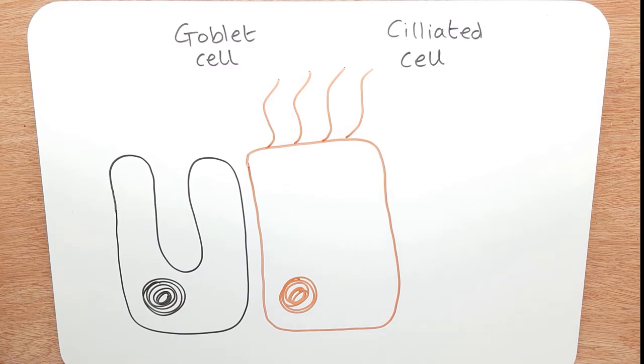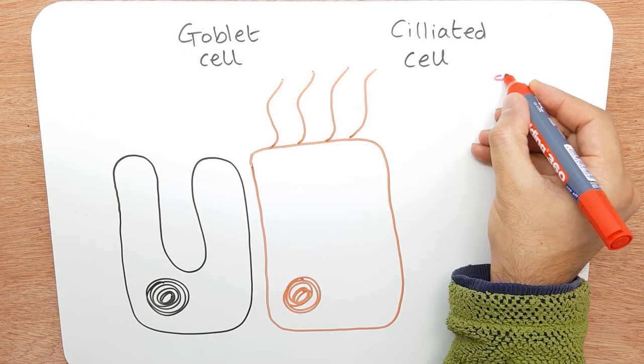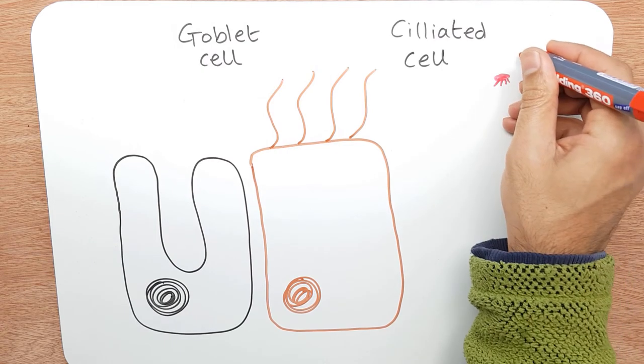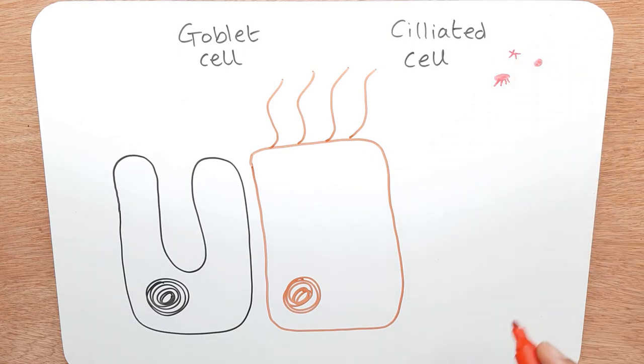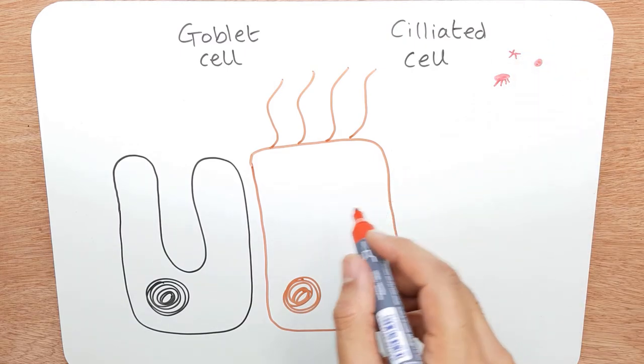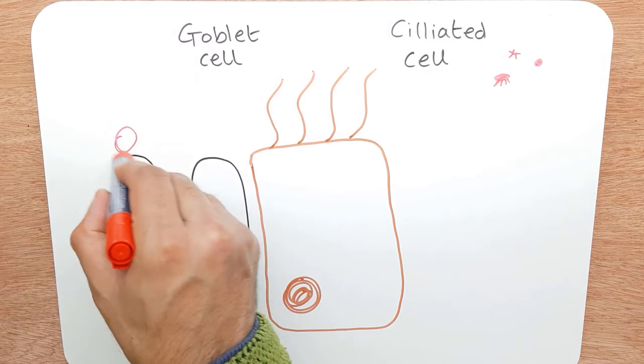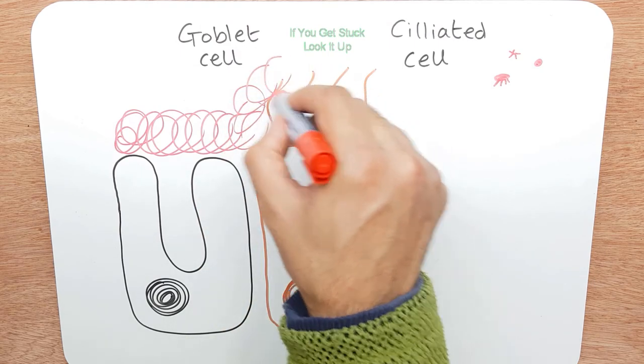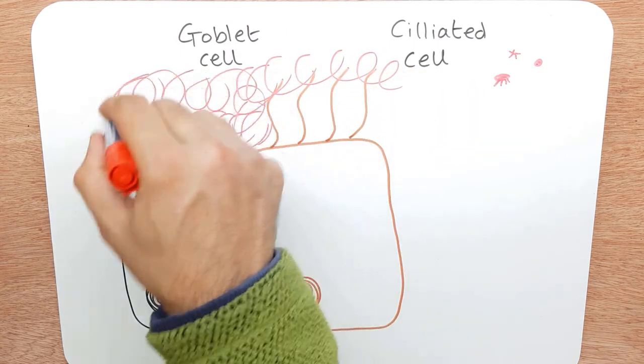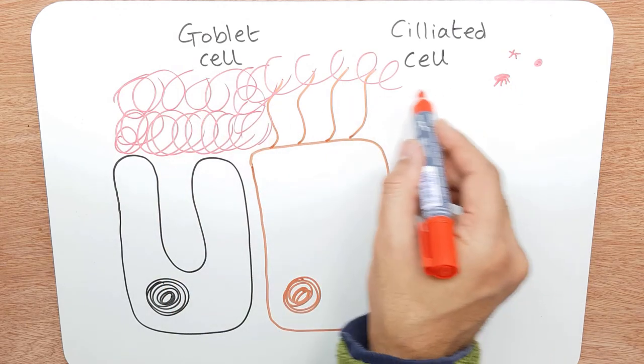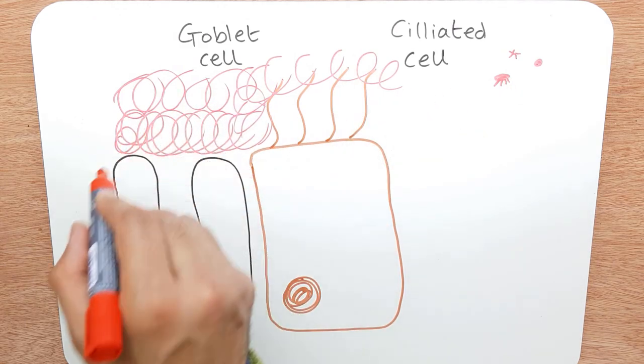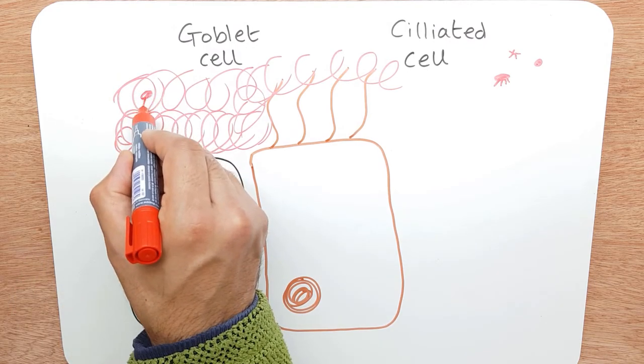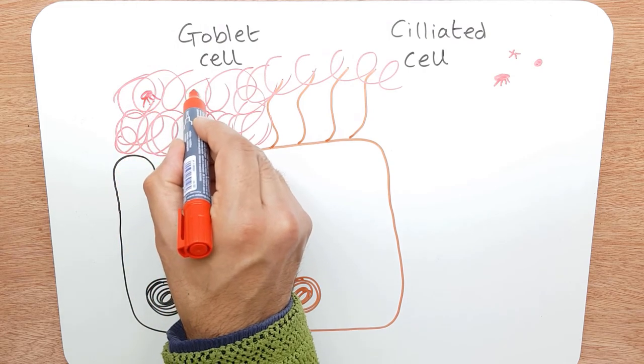Now, what happens here is as you breathe in, you get little bits of bacteria, dust, smoke particles. They come in. And this cell here produces a mucus to trap these. So these come along, they try to get to the end of the lungs towards the alveoli, but what happens is they get trapped in here, which is a good thing.